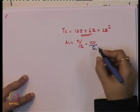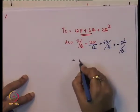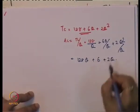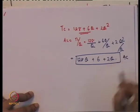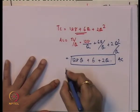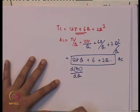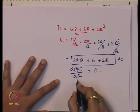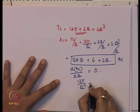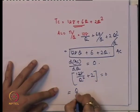When we find the average cost, we divide by the unit of output. So Average Cost = 128/Q + 6 + 2Q. To find at which point average cost is minimum, we take the first order derivative of average cost with respect to Q and equalize it to 0. This gives us −128/Q² + 2 = 0, which simplifies to Q = 8.